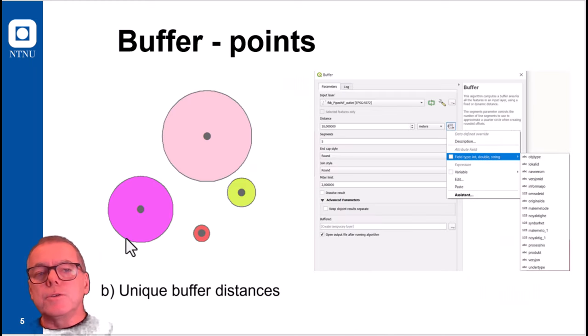The buffer distances do not have to be the same for all objects. You can have them vary from point to point. And then instead of setting one distance for all objects, you need to have a field having values for the individual buffer distances for the input objects.